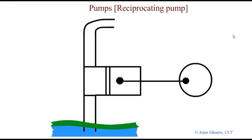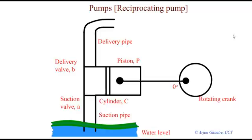A reciprocating pump is a positive displacement pump. It makes a fluid move by trapping a fixed amount and forces that trap volume into the discharge pipe. Now here is the labeling section of a reciprocating pump.